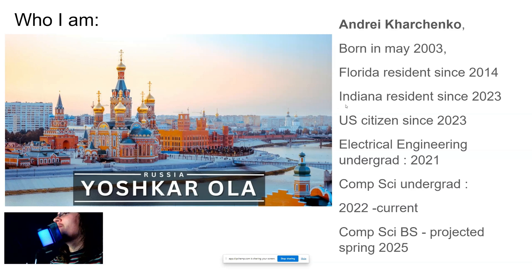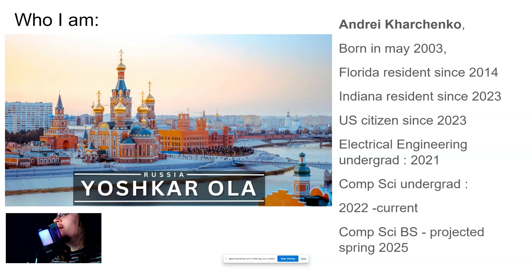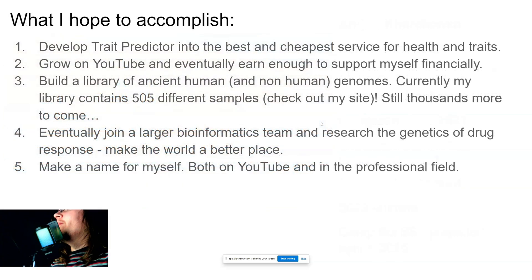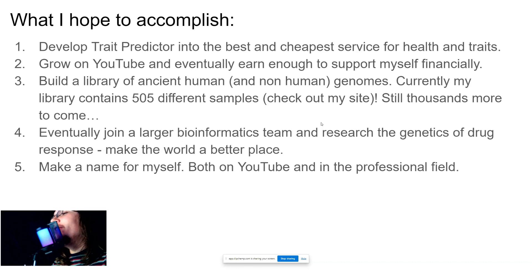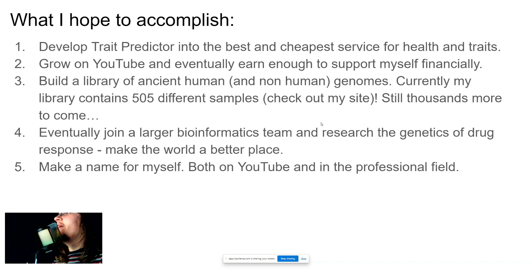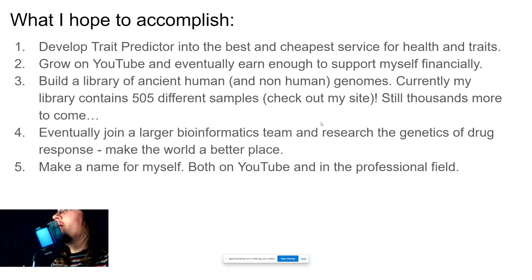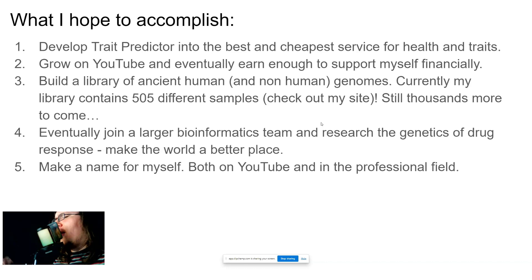I'm doing well in terms of life goals — I'm exactly where I want to be. I'm expected to get my bachelor's in spring 2025. What I hope to accomplish: number one, I hope to develop Trade Predictor into the best and cheapest service for health and traits. Every couple of days I make updates, and you will find that on my page — there's a new version regularly. I recommend that if you bought Trade Predictor, you stay on top of those updates because I will be updating very, very frequently.